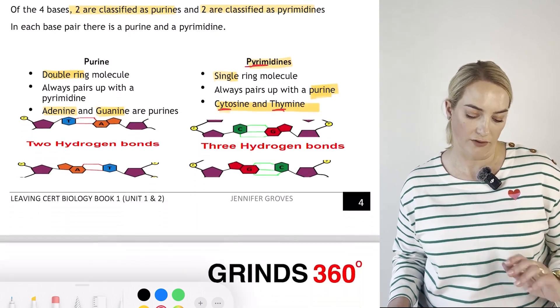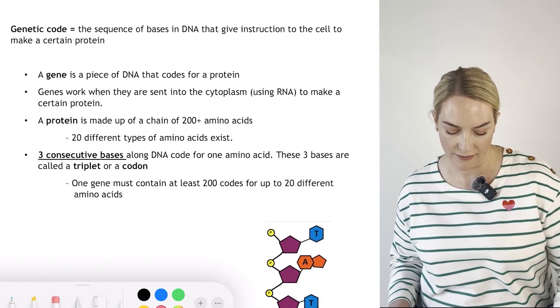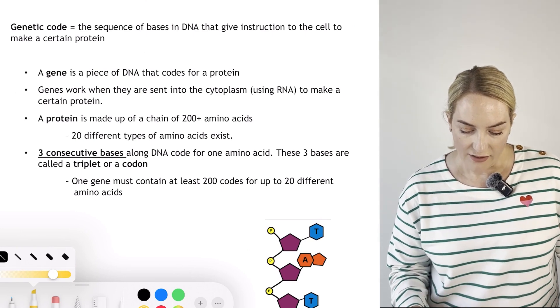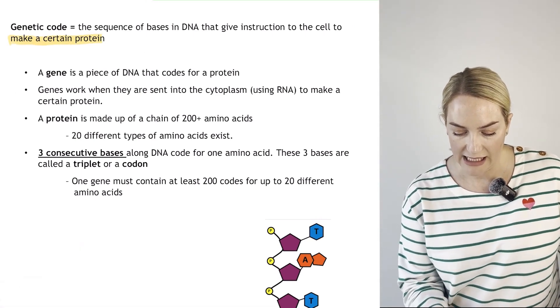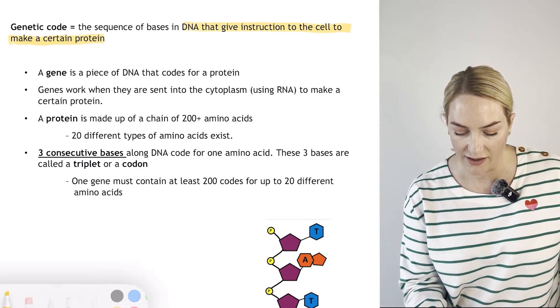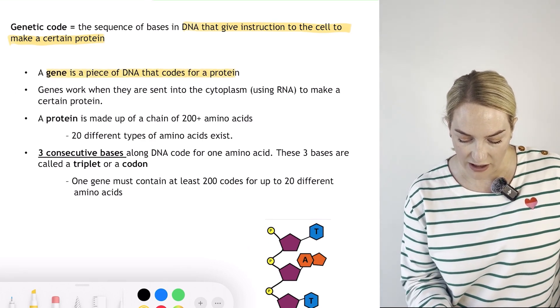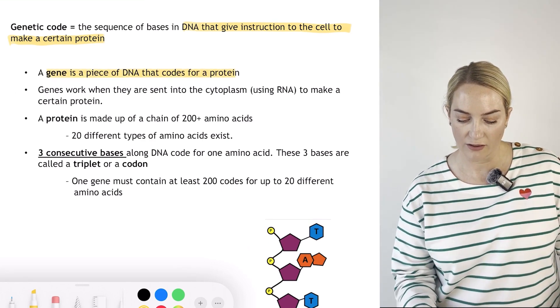The genetic code is a sequence of bases in DNA that give the instructions to the cell to make a protein. A gene is a piece of DNA that will code for the protein. Genes work when they are sent into the cytoplasm to make a certain protein.